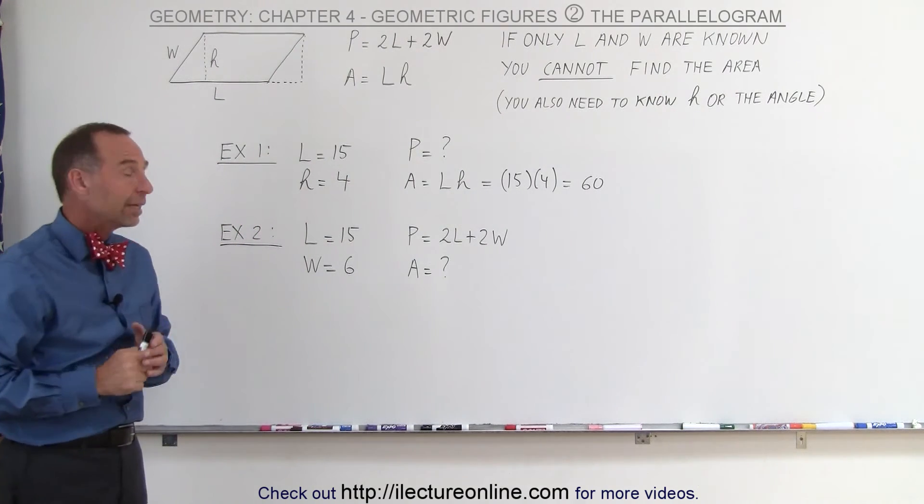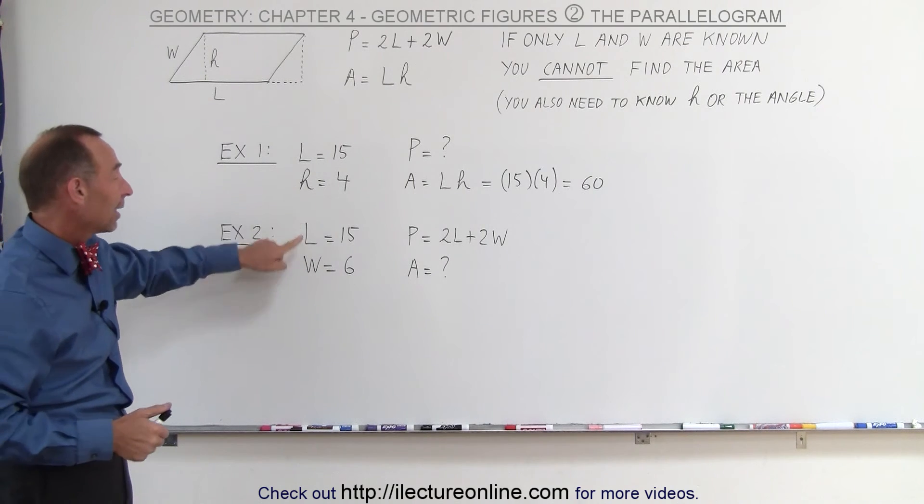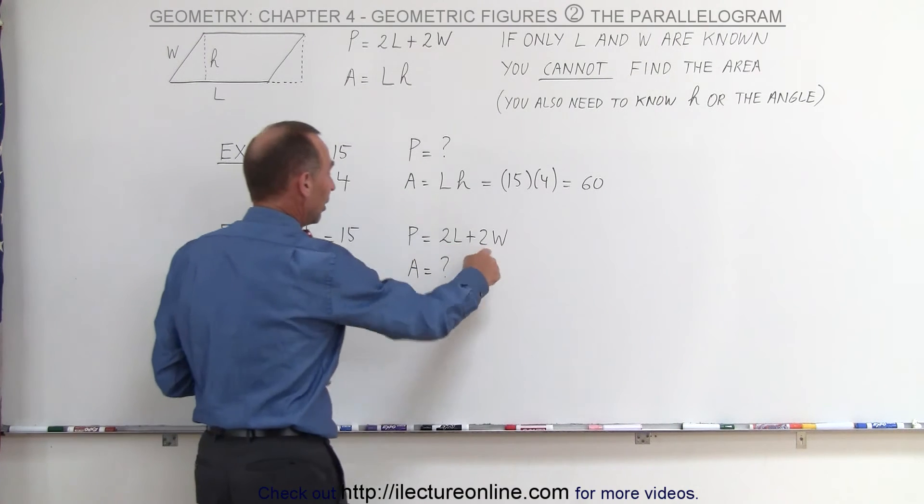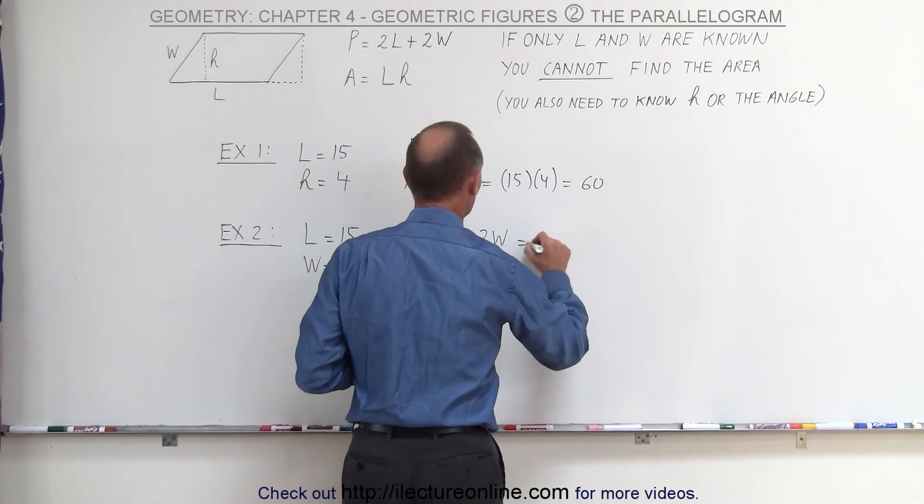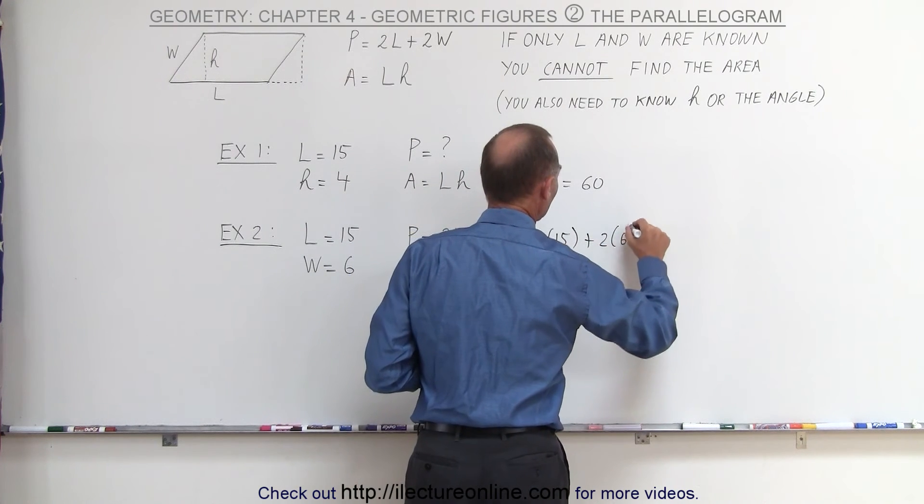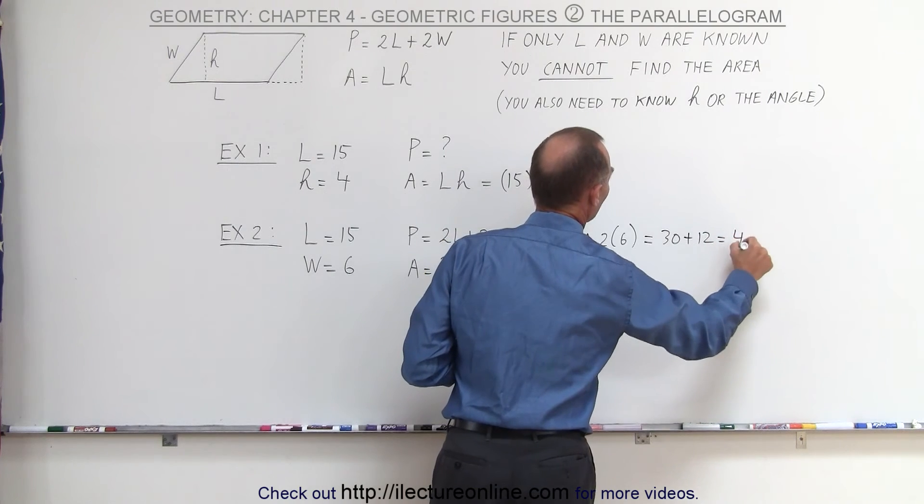In our second example, we're given the length of the long side and the length of the short side, L and W. Now, you can find the perimeter because you know both L and W, so that would be equal to 2 times the long side, which is 15, plus 2 times the short side, which is 6, so that gives us 30 plus 12, or 42.